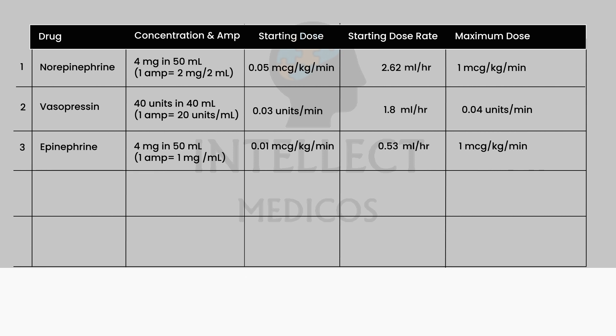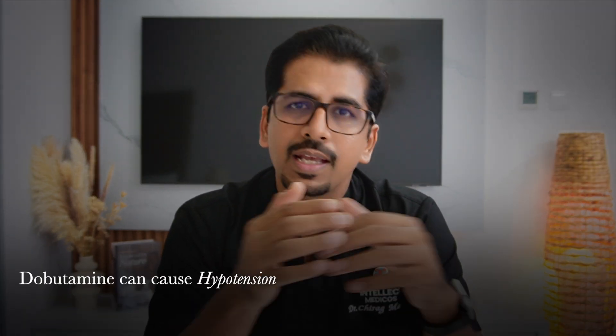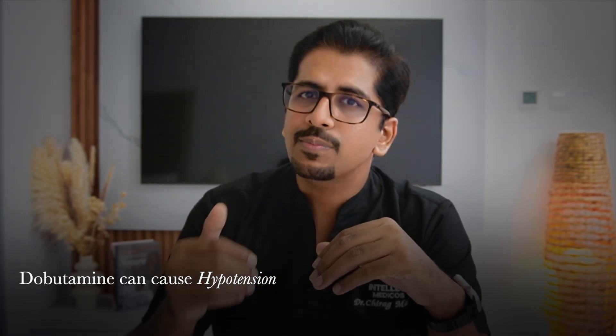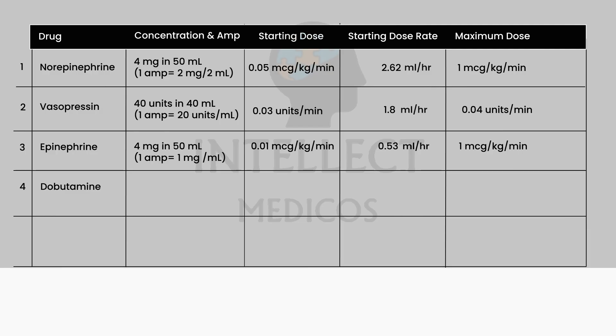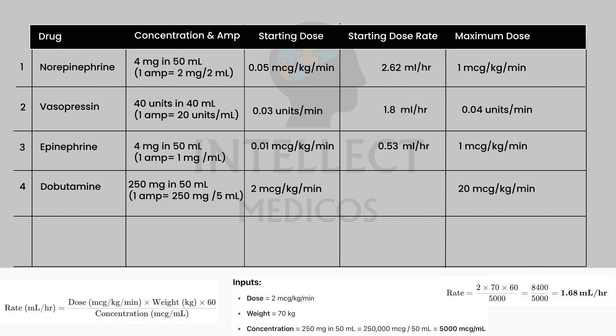Dobutamine has a distinct role — it is specifically indicated in cardiogenic shock when cardiac output is low. The problem with dobutamine is that it can cause hypotension when started; in that case, use norepinephrine to support blood pressure. Once pressure is maintained, if the patient has low ejection fraction, add dobutamine to increase contractility. One ampule contains 250 mg in 5 ml; take 250 mg in 50 ml. Starting dose is 2 mcg/kg/min, maximum is 20 mcg/kg/min, starting at 1.68 ml/hr on the infusion pump.